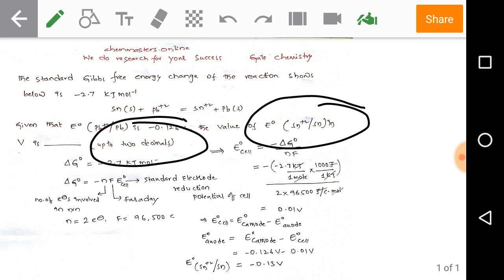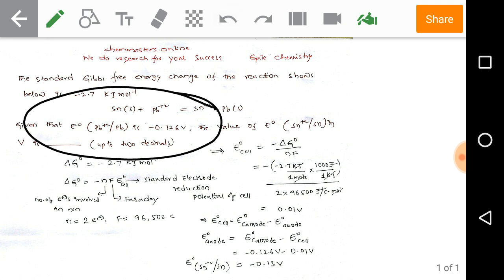We have given one half cell reduction potential. If you observe the reaction, Pb²⁺ to Pb is the cathode, so we have the cathode half cell reduction potential.